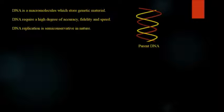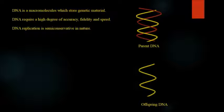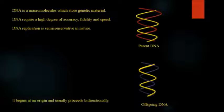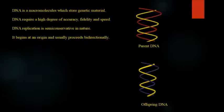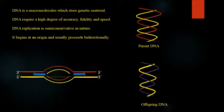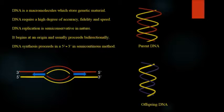It means from a parental DNA only one strand is passed to the offspring while the other strand is formed by the offspring itself. It begins at an origin and easily proceeds bi-directionally as shown here. DNA synthesis proceeds in a five-prime to three-prime direction in a semi-conservative method.